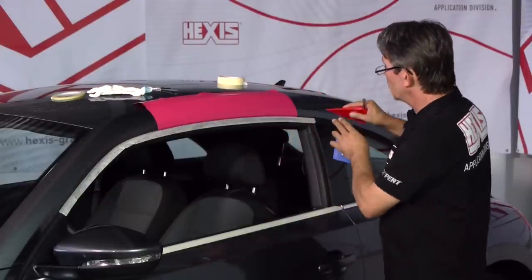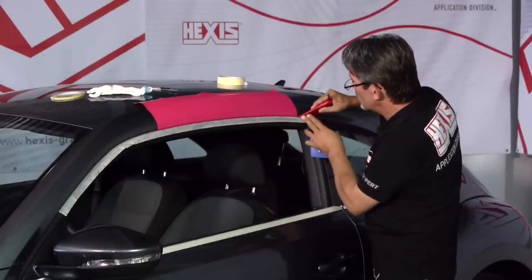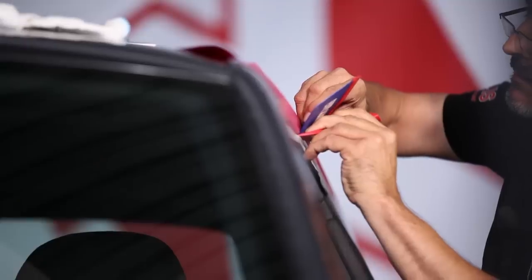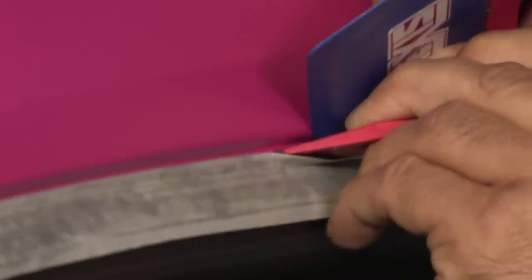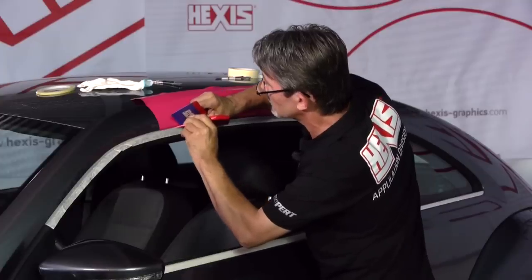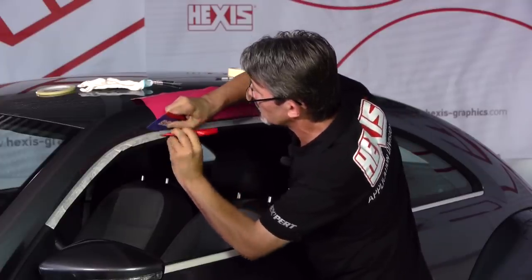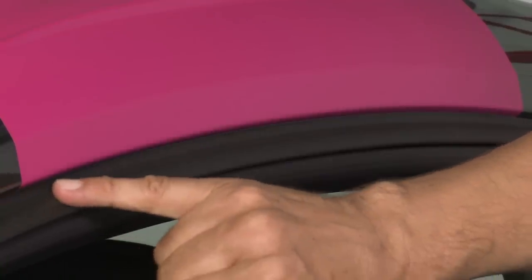With the help of this squeegee we're going to push the seal back so we can slide the vinyl inside. We have a perfect cut because we cannot see the color of the vehicle paint.